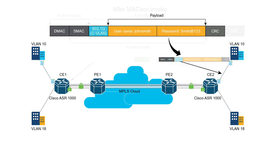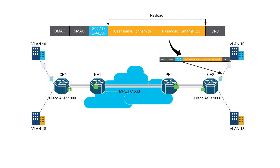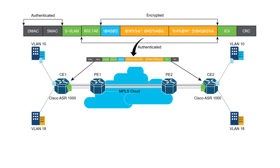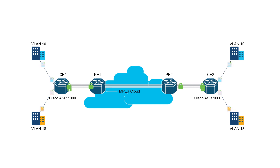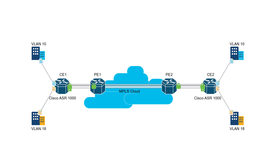After the Cisco WAN MACsec frame is decrypted on CE2, C-VLAN 10 becomes available, thereby not exposing the LAN network implementation on the WAN. Another enterprise can transport layer 2 LAN traffic based on C-VLAN 18 over the WAN link, independently securing the traffic using Cisco WAN MACsec's tag in clear over the same or different S-VLAN using Cisco Ethernet virtual circuit. Enterprise branches can use Cisco WAN MACsec to selectively encrypt their LAN traffic over WAN, protecting their internal LAN network design.